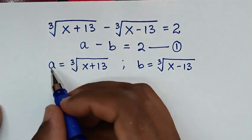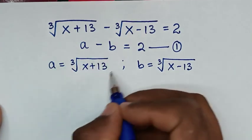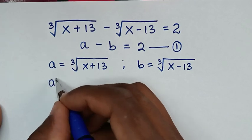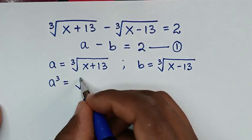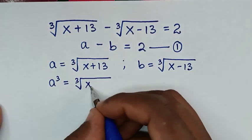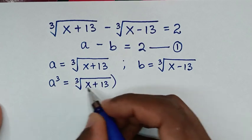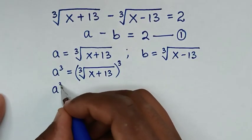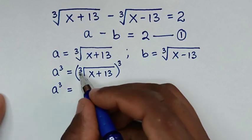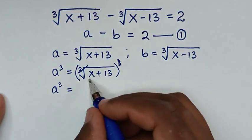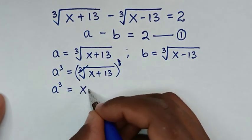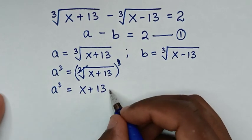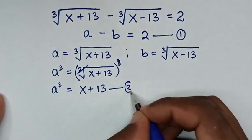To remove the cube root, we power both sides by 3. So it will be a³ equals cube root of (x + 13), and since the cube root cancels the power 3, it becomes a³ equals x + 13. We call this equation 2.